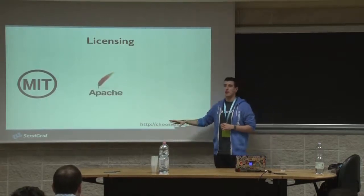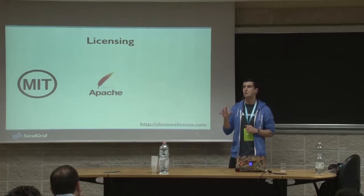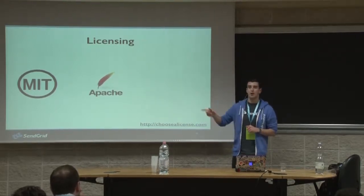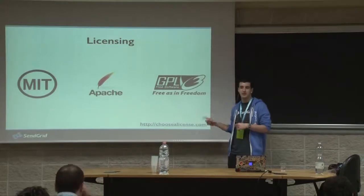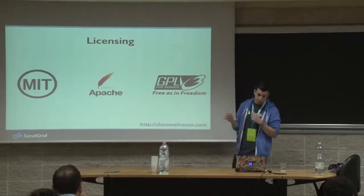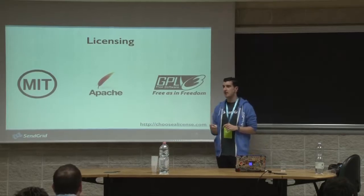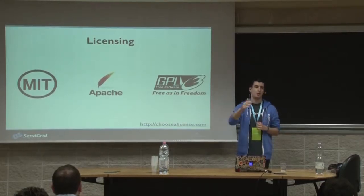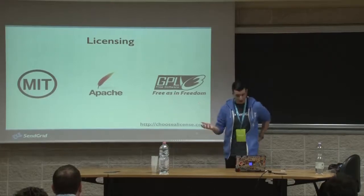MIT is a permissive license that lets anybody do anything with your software as long as they provide attribution back to you, and it prevents you as the software creator from being liable for any problems caused by your code base. The second biggest is the Apache 2.0 license, similar to MIT but also providing an express grant of patent rights from the software creator to any sub-users and protecting trademarks. The third is the GPL v2 and v3 license — a copy-left license — semi-permissive, but anyone who redistributes your code must keep the same licensing terms you originally put on it.